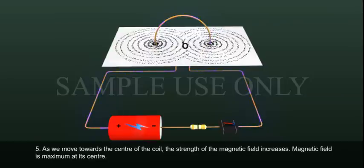As we move towards the center of the coil, the strength of the magnetic field increases. Magnetic field is maximum at its center.